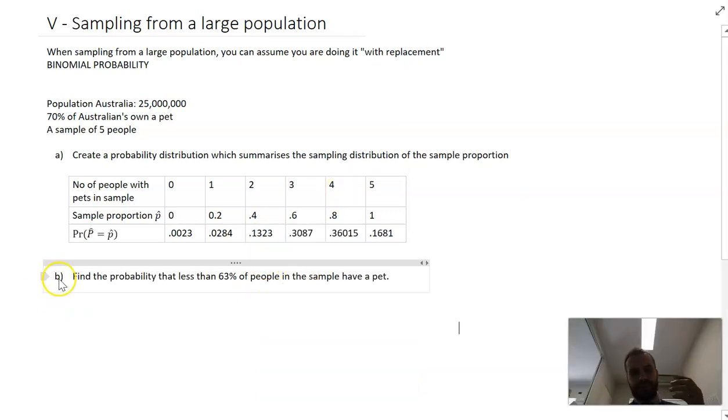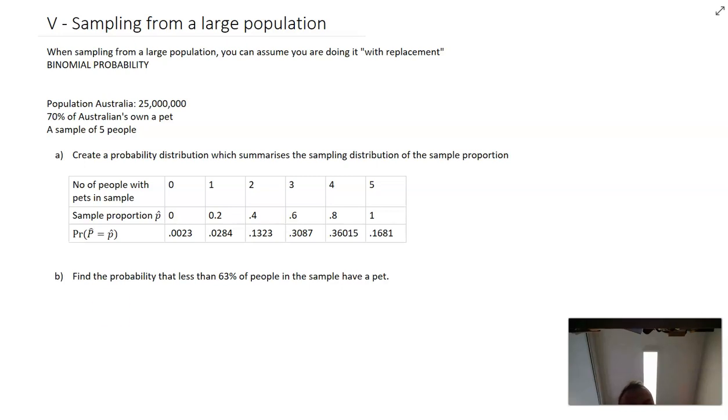Now that we've got that, we can do a question that's a little bit like this. Find the probability that less than 63% of people in the sample have a pet. Now that's become something like this: find the probability that p hat is less than 0.63.